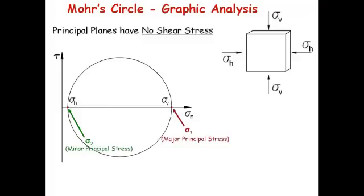And that is just due to the fact that the planes that are called principal have no shear. So if there's no shear, the shear is equal to zero. In other words, the y-axis is equal to zero. So they have to be along the x-axis.